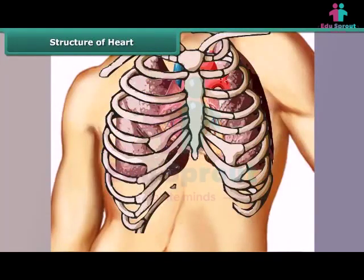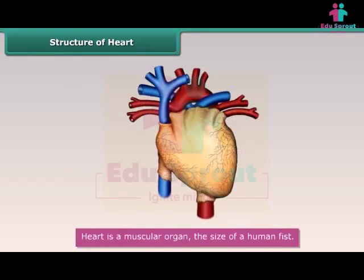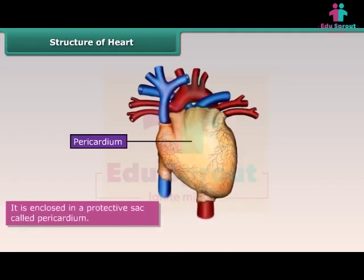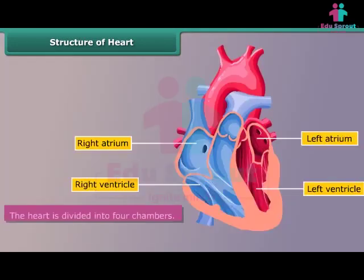The heart is a muscular organ located slightly to the left of the middle in the chest cavity. It is the size of a human fist and is responsible for pumping blood to different parts of the body. It is enclosed in a protective sac called the pericardium. The heart is divided into four chambers: the left atrium and right atrium at the top, and the left ventricle and right ventricle at the bottom.